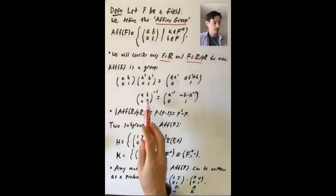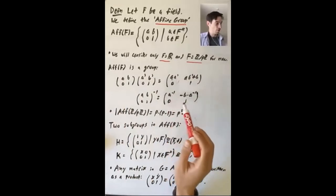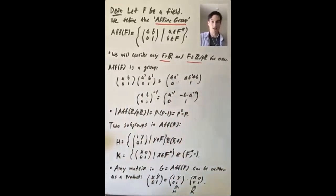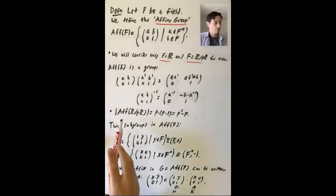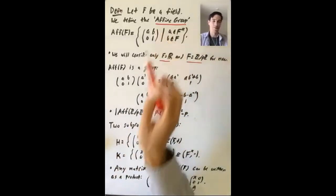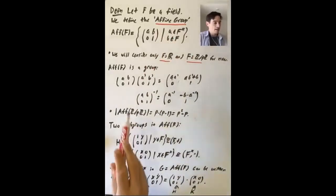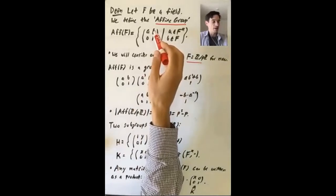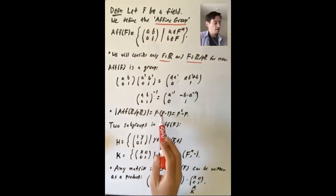The inverse of [A, B; 0, 1] is [A⁻¹, -BA⁻¹; 0, 1], where -B is the additive inverse of B. So how big is this group? If your field is infinite, there are infinitely many choices for B and it's infinite. But if F is ℤ mod pℤ, then we have p choices for B and p-1 choices for A, so the size of this group is p(p-1) = p² - p.